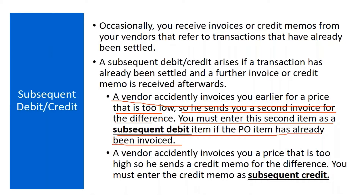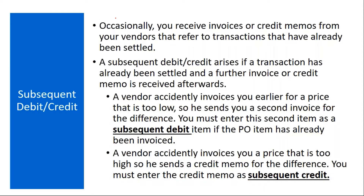Subsequent credit is different. A vendor accidentally invoices you for a price that is too high, so he sends a credit memo for the difference. You must enter the credit memo as subsequent credit. So subsequent debit means you are going to pay extra to him. Subsequent credit means he is going to return money to us — that's the difference.